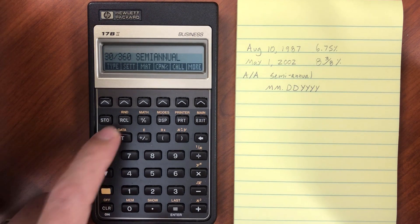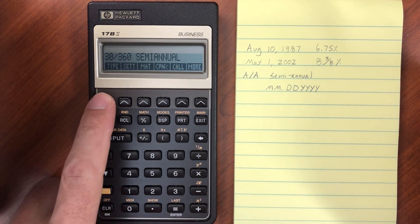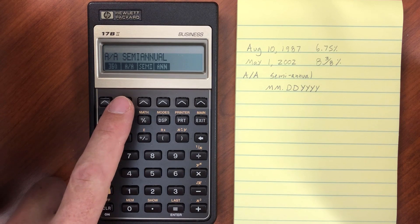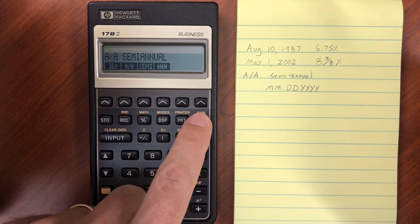Alright, so first, let's go ahead and clear our data, then we're going to set the type to actual/actual. Go ahead and back up to the previous menu.